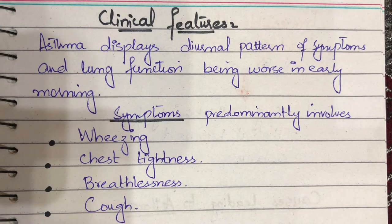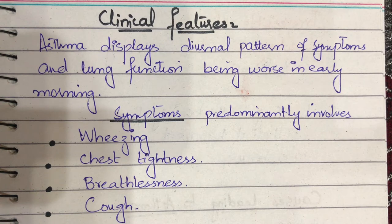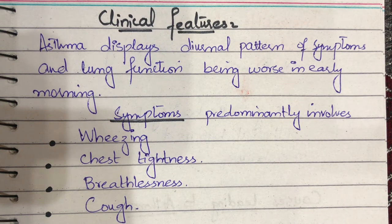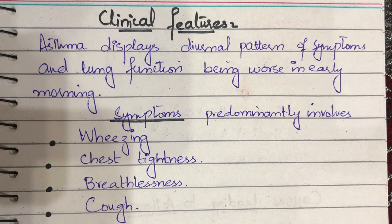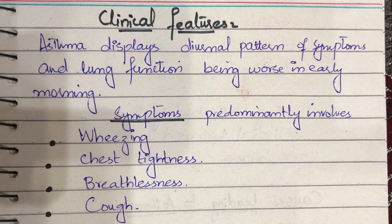While discussing the clinical features of asthma, asthma displays a diurnal pattern of symptoms, with lung function being worst in early morning. Diurnal variation means symptoms are more prominent in early morning or late night. Clinical features include wheezing, chest tightness, breathlessness, and cough. Wheezing is a whistling sound. The patient will have tightness and breathlessness and cannot breathe easily; significant effort is required. Some patients have only one symptom — cough — which can be severe enough to wake the patient from sleep.